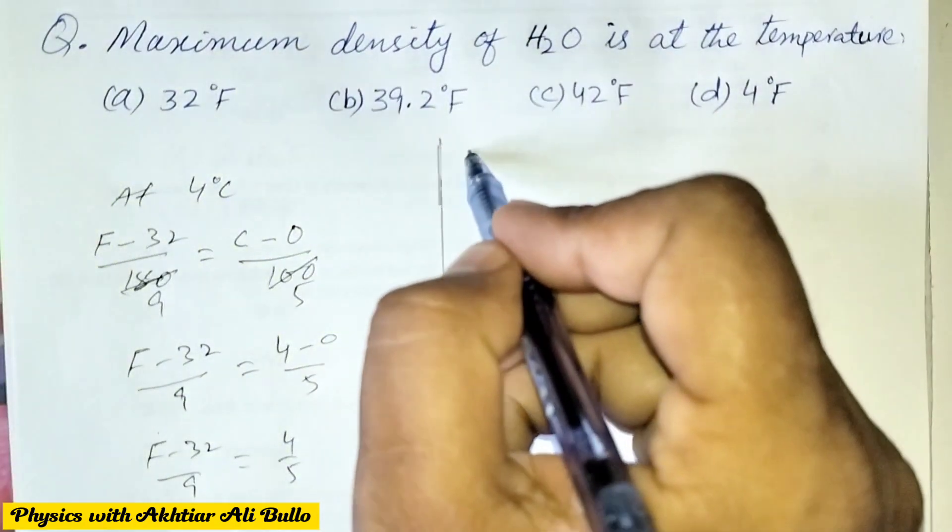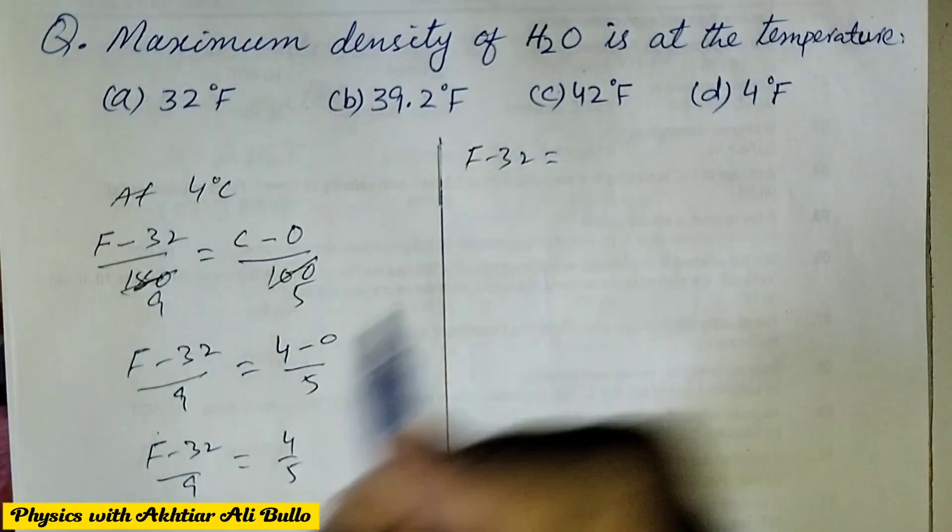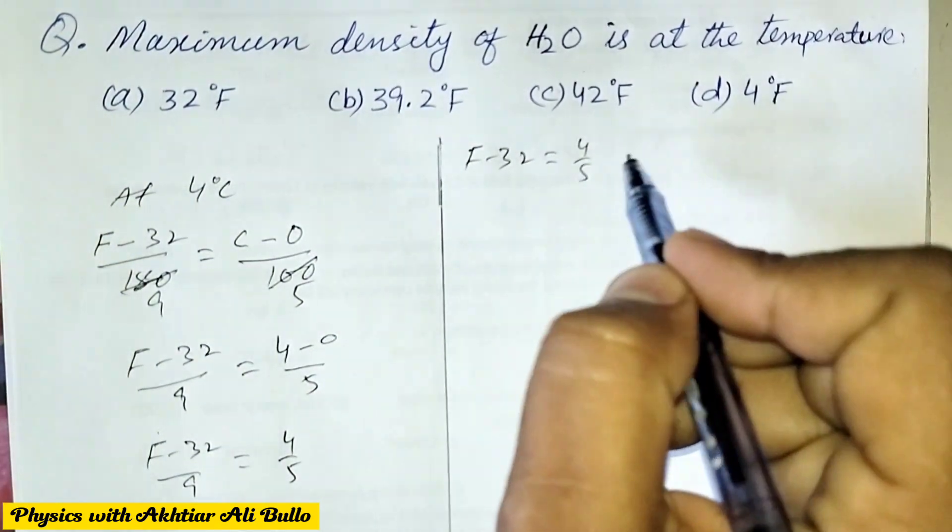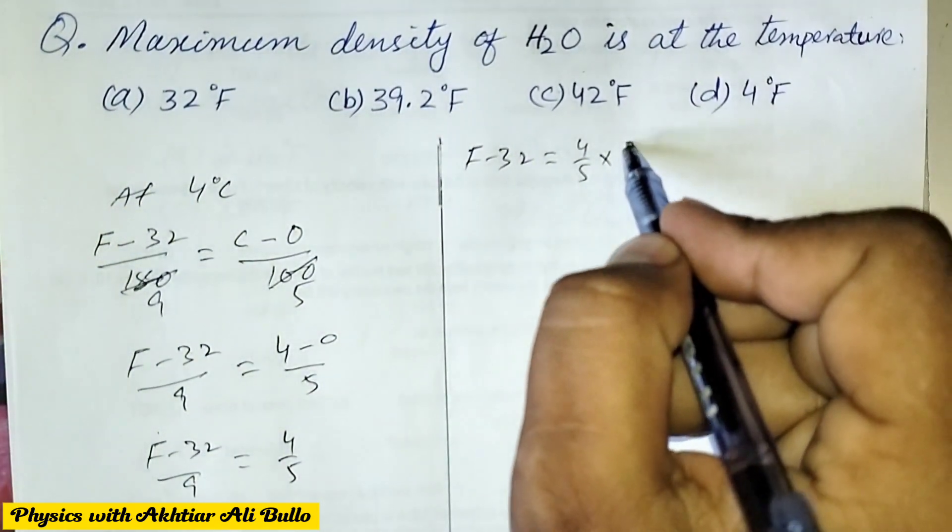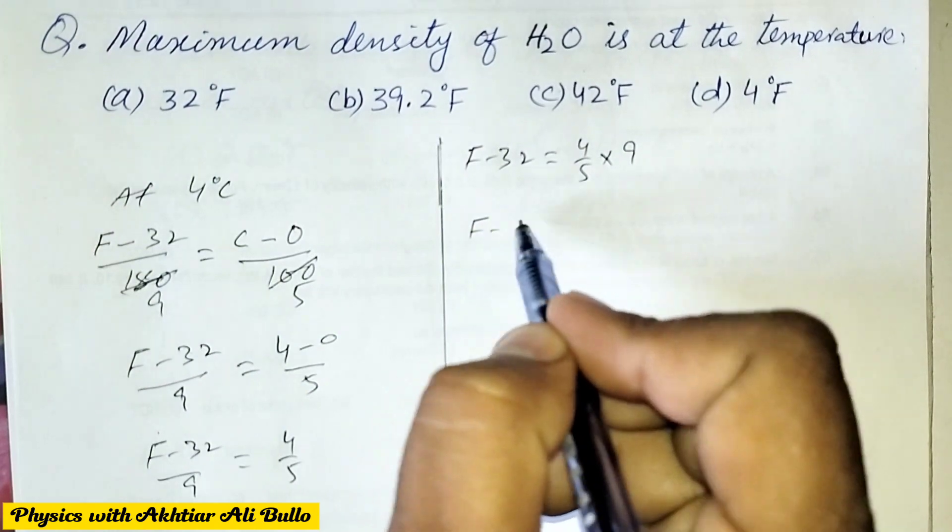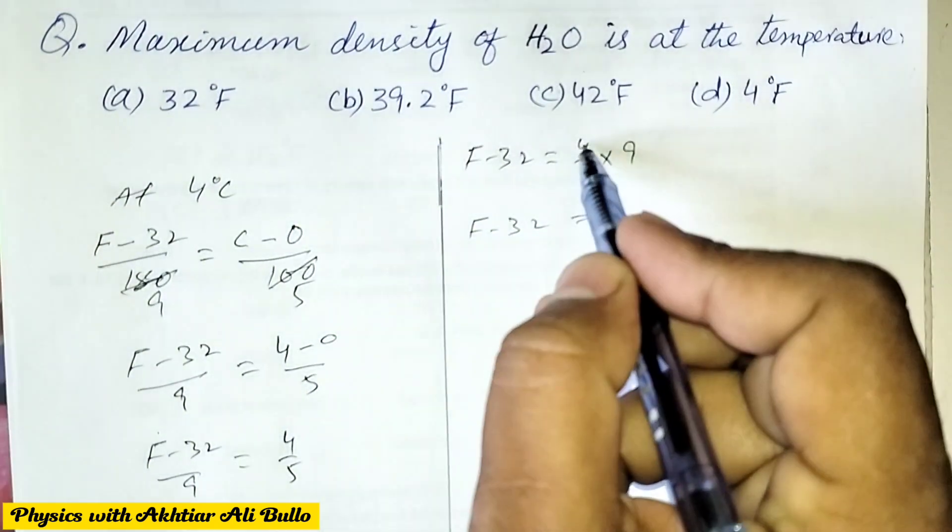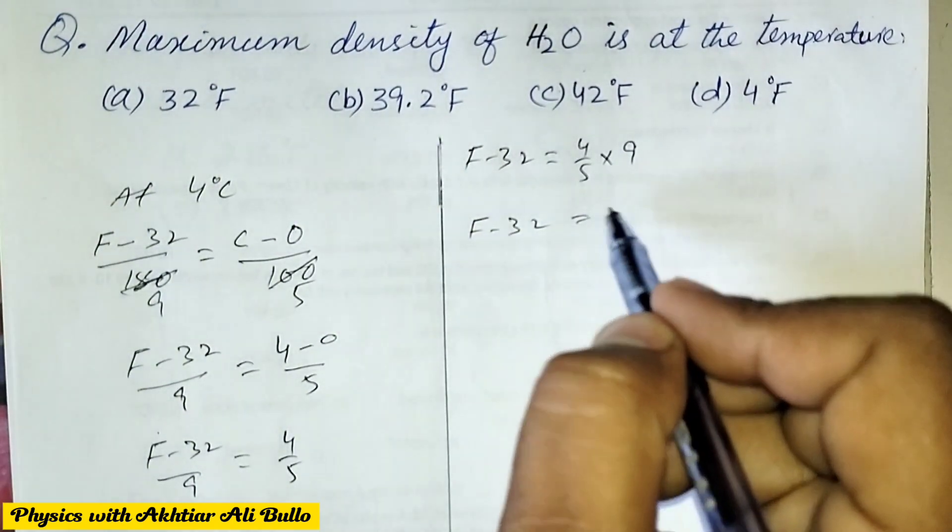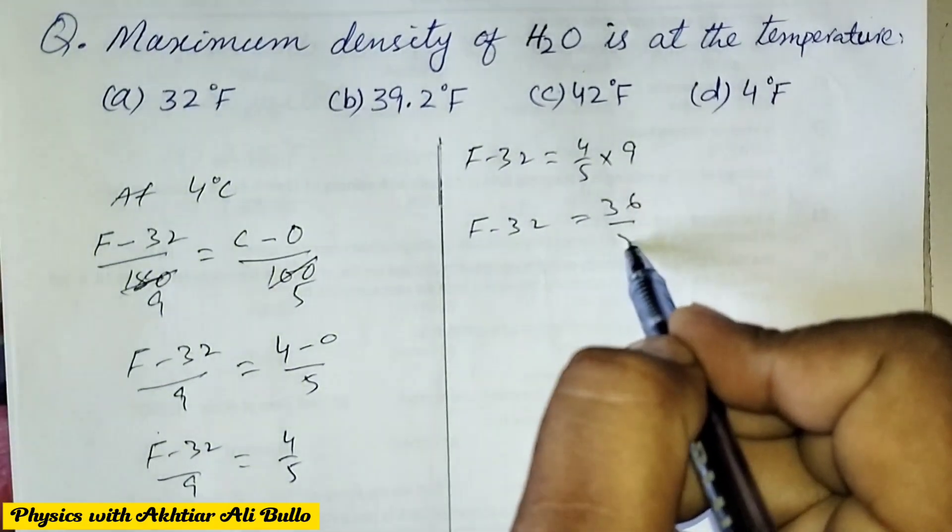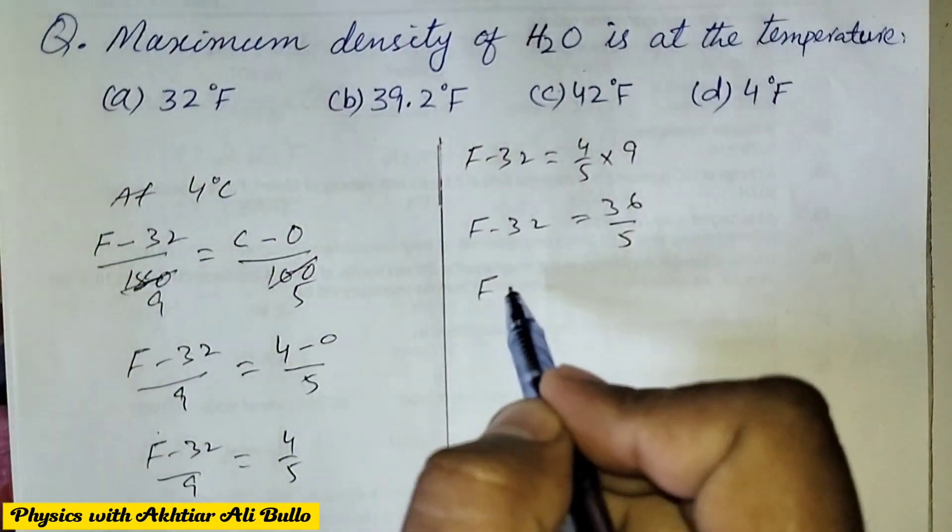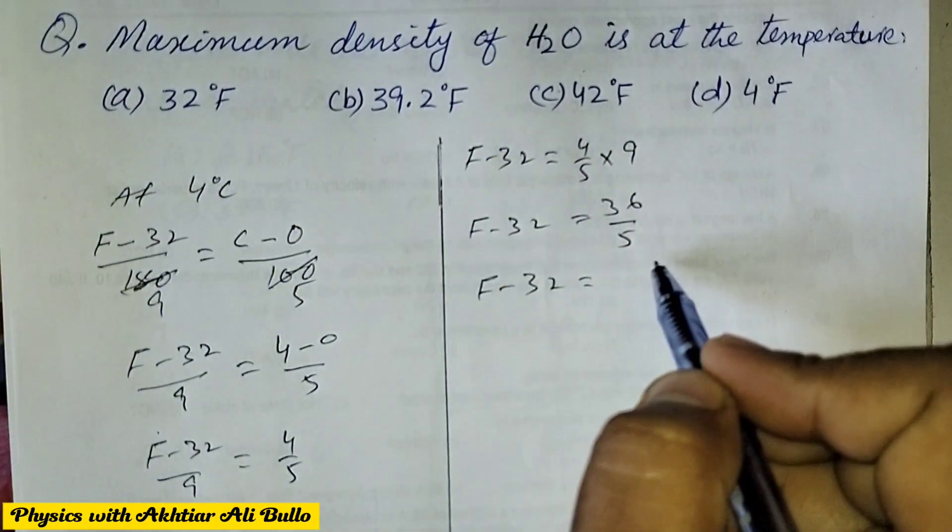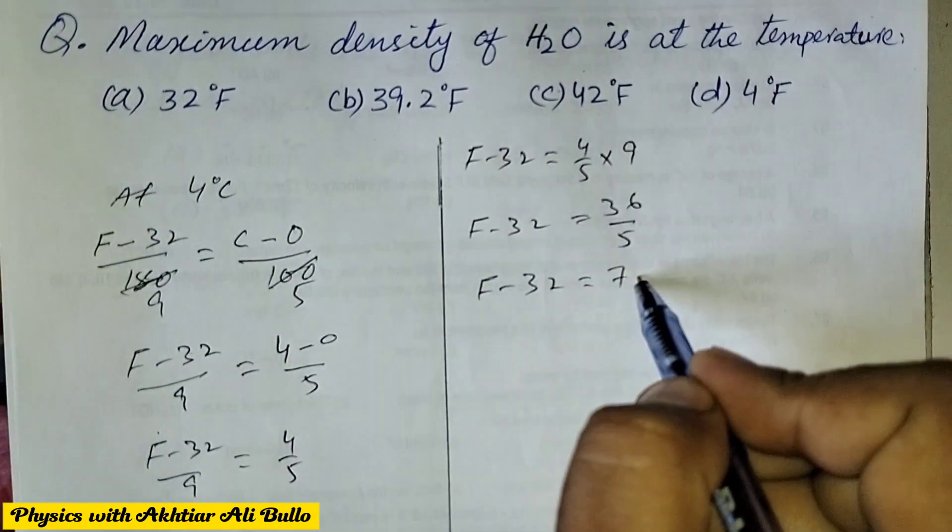F minus 32 upon 9 is equal to 4 upon 5. F minus 32 is equal to 4 upon 5 into 9. F minus 32 is equal to 4 into 9, it will be 36 upon 5.